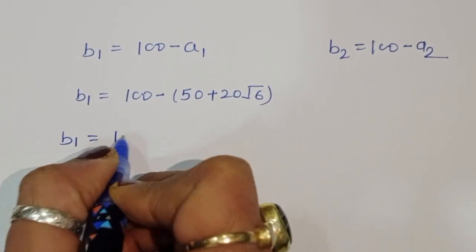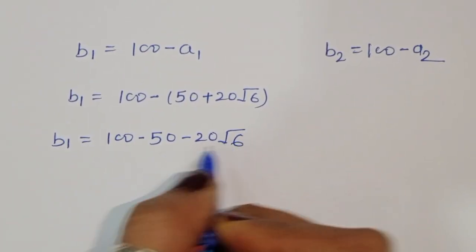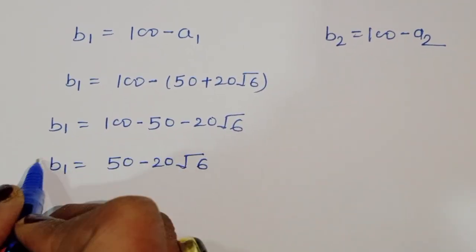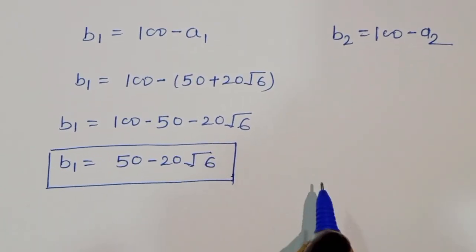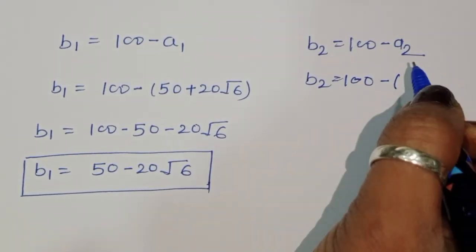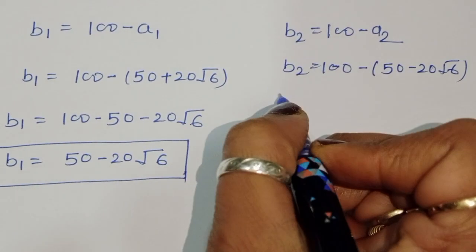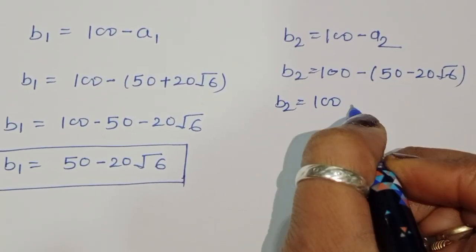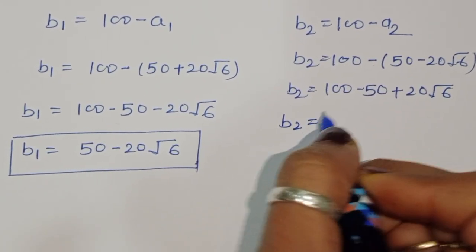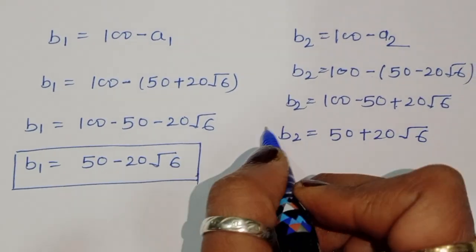b1 equals 100 minus (50 plus 20 square root of 6), opening the bracket gives b1 equals 50 minus 20 square root of 6. Similarly, b2 equals 100 minus a2 equals 100 minus (50 minus 20 square root of 6), so b2 equals 50 plus 20 square root of 6.